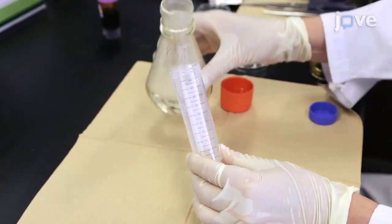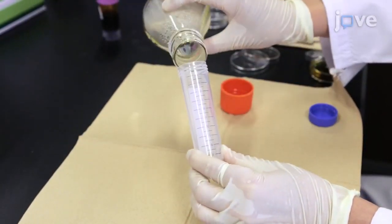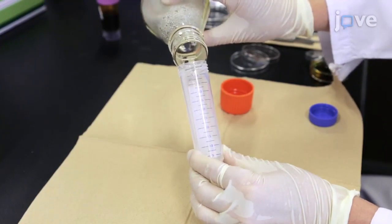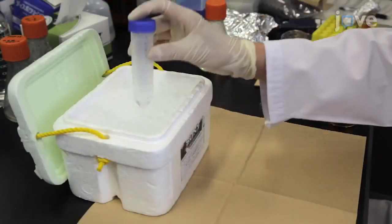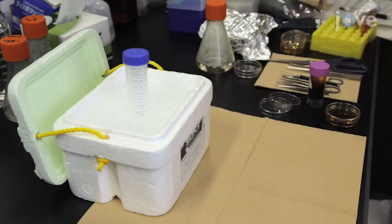In a 50 ml tube, gently pour 5 ml of 0.5% agarose without making bubbles. Place the tube on ice to harden the agarose.